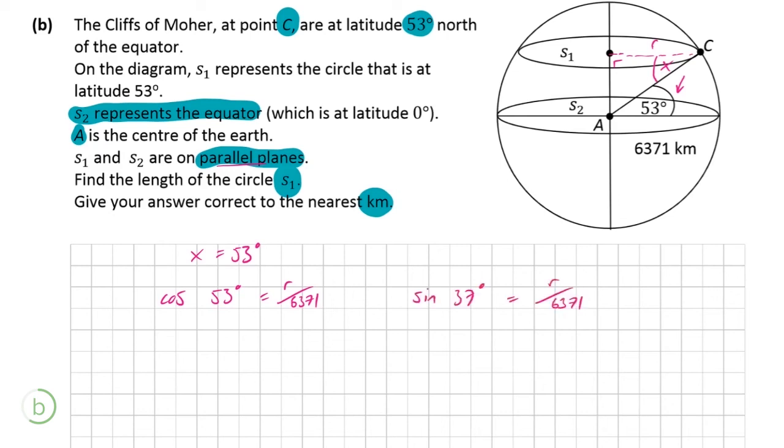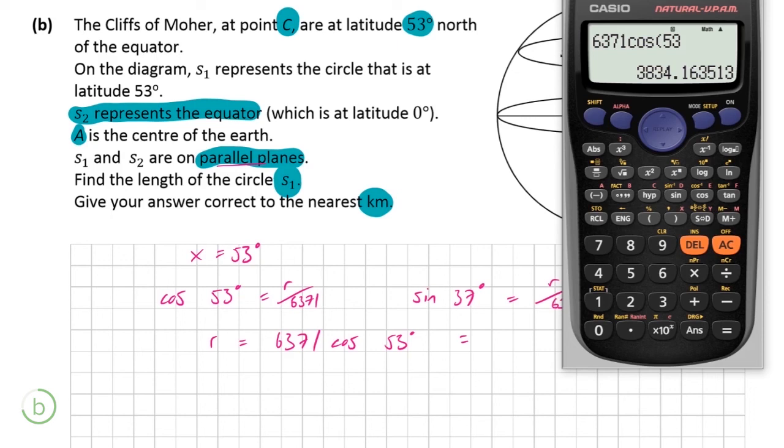Now you could also say that sin 37 degrees is equal to R over 6,371 again because we know the value of this angle in here is going to be 90 minus 53 and therefore you could also use that. So really whichever you prefer but I'm going to proceed with cos 53 degrees anyways. So that means that the radius is equal to 6,371 times cos 53 degrees and the value of this is 3834.1635.